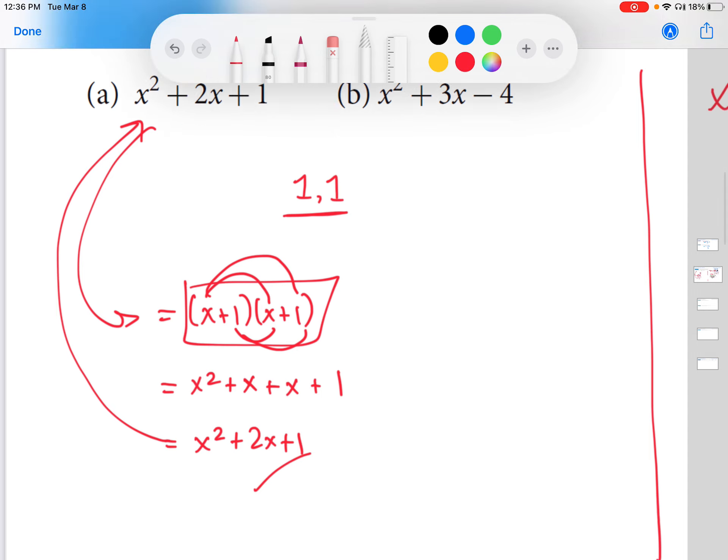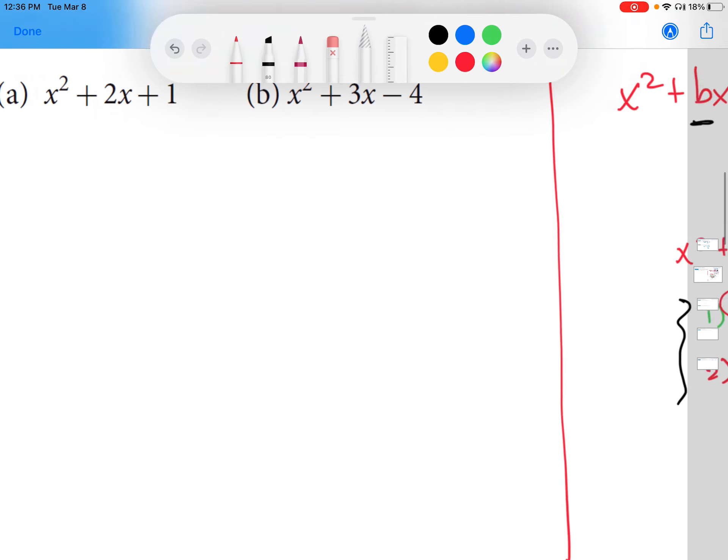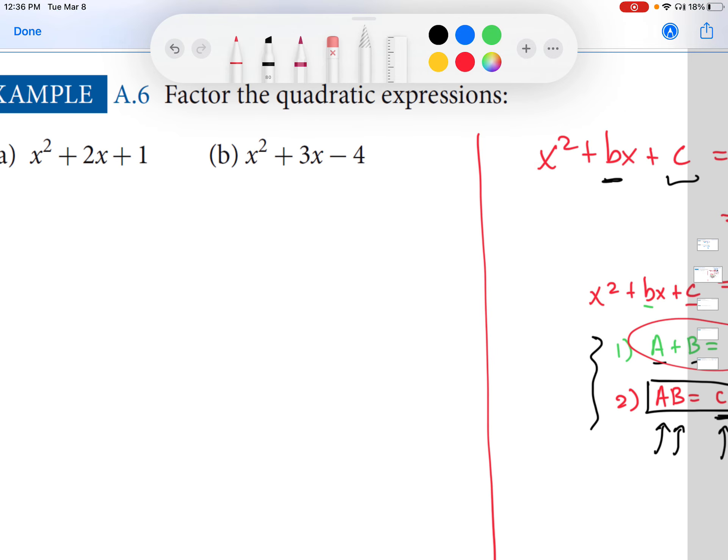All right, so now let's go back and do this all over again for a slightly more difficult example, the one over here on the right. So let's give that a shot. So in this example, there's different numbers. The b here is three, and then the c here is negative four.